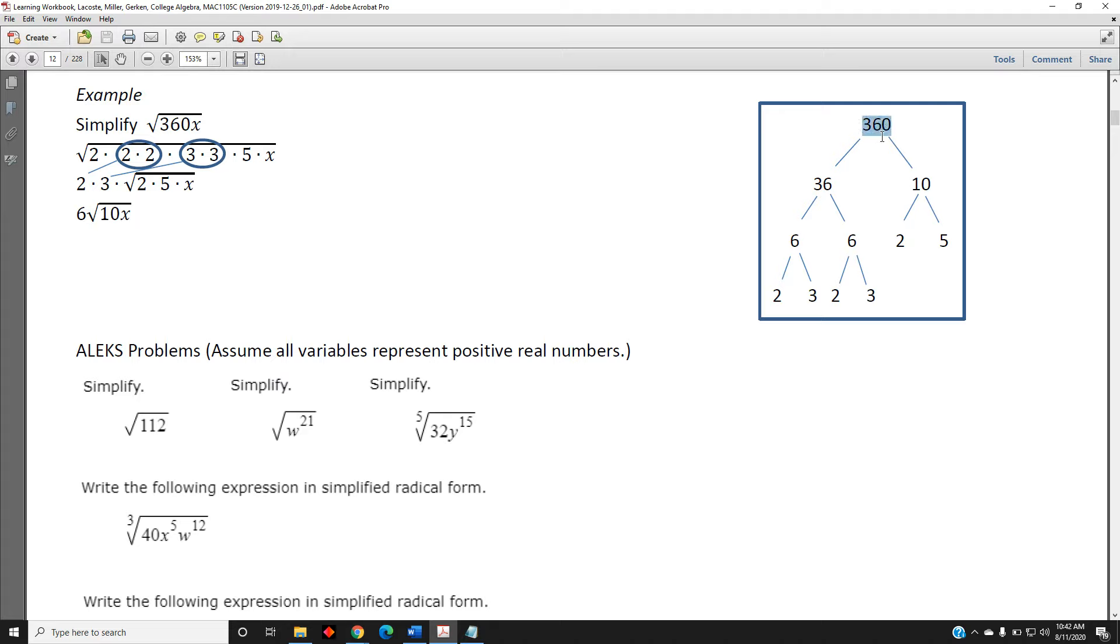For example, 360 can be written as 36 times 10. 10 can be written as 2 times 5. 2 and 5 are both prime numbers and cannot be broken down any further. 36 can be written as 6 times 6, and each 6 can be written as 2 times 3.